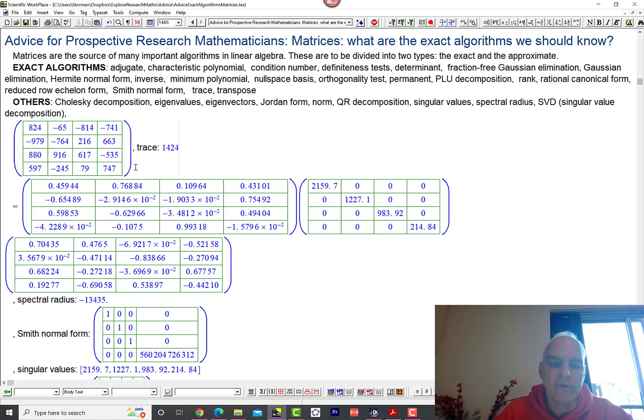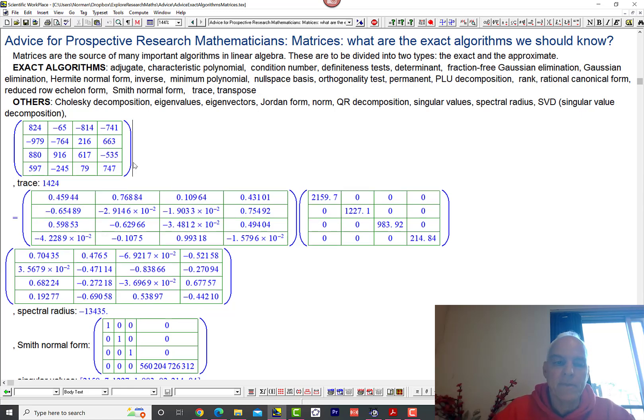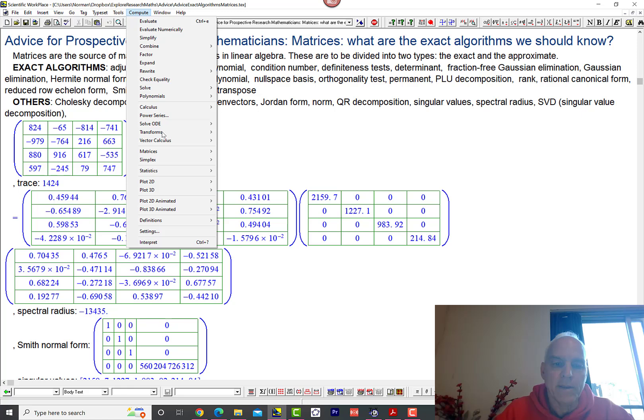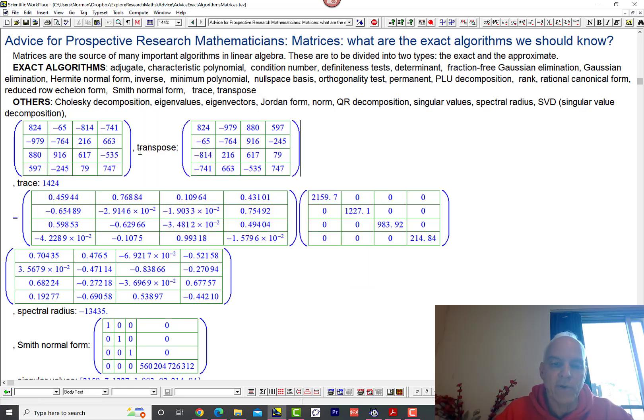Finally we only have two more. The trace of course is just the sum of the diagonal entries, so that's a completely exact algorithm. And finally the transpose of the matrix—easy enough, that's of course also exact.